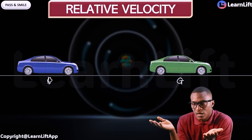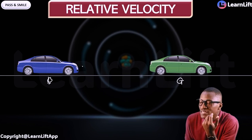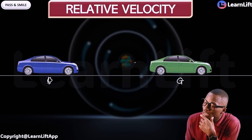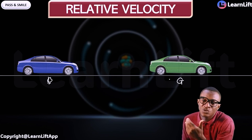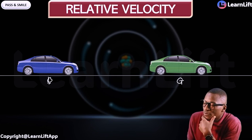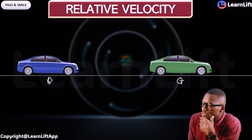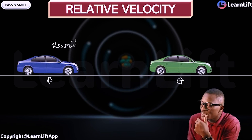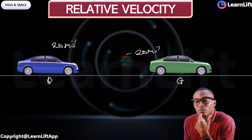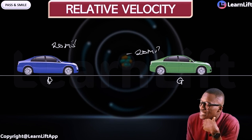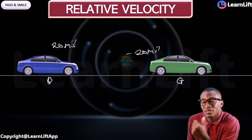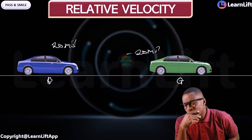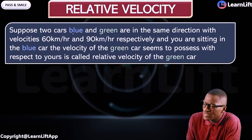If you're in the green car, you're going to see that the blue car is behind with a particular value — let's say 10 meters per second. If you're in the blue car, you see that the green car is ahead with, say, 20 meters per second. So if the difference is 20 meters per second, you in one car see the other car as 20 meters per second ahead, while you in the other car see it as minus 20 meters per second behind.